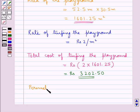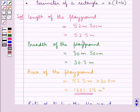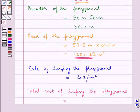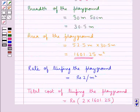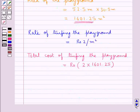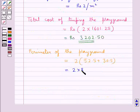Next, let's find the perimeter of the playground. The perimeter is equal to 2 into the length plus the breadth, which is 2 into 52.5 meters plus 30.5 meters. This is equal to 2 into 83 meters, which is equal to 166 meters. That is the perimeter of the playground.